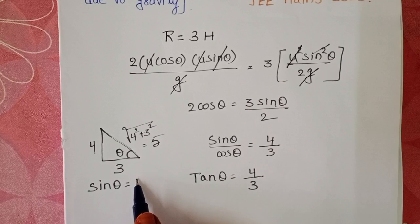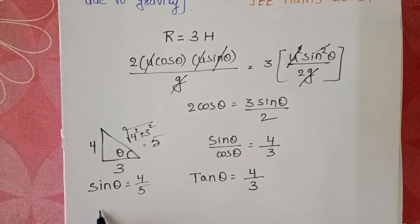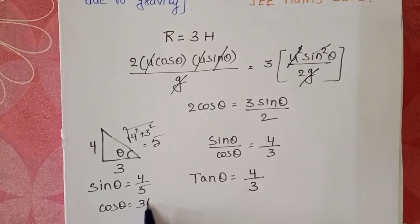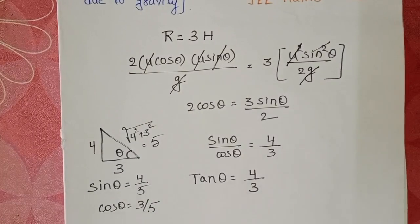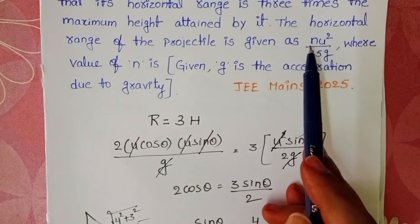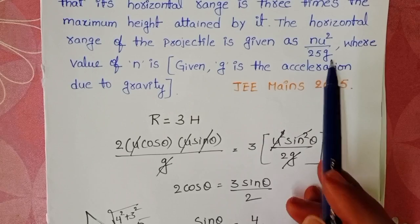So sinθ value becomes 4/5, and cosθ equals 3/5. Here we know range is nu²/25g.